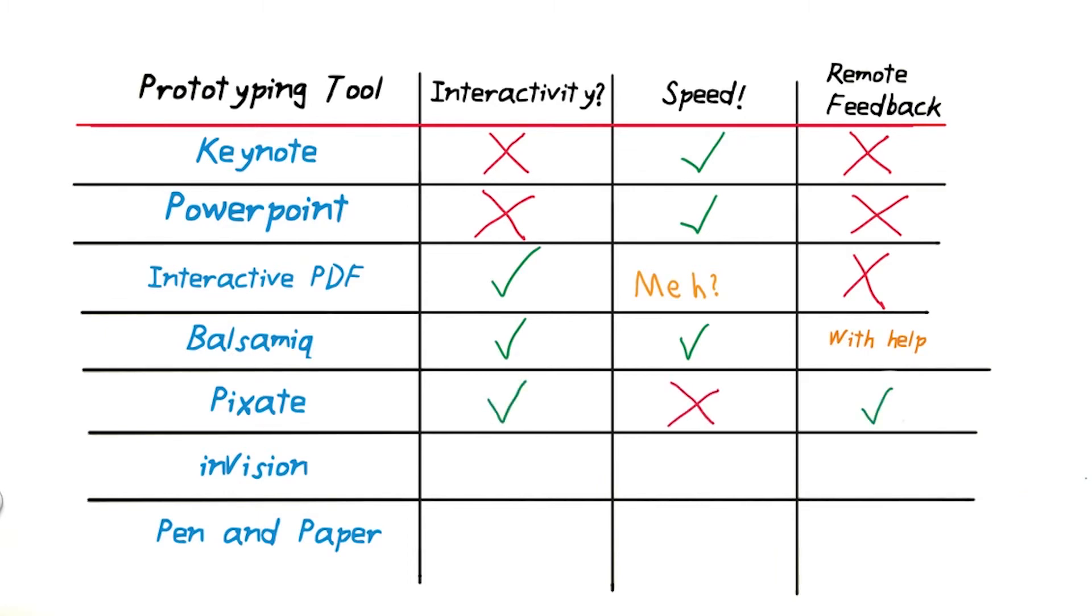Pixate is a prototyping software targeted at high fidelity prototyping. It does interactions, and a lot of its power is in the way it deals with micro-interactions and animations. We'll revisit Pixate in the next lesson. For now, it's a bit slow for our purposes.